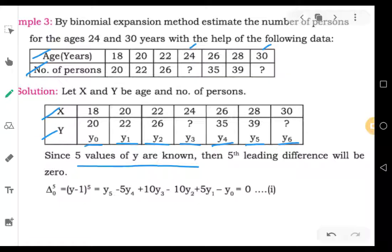That means we have to take 5th leading difference. That is, delta to the power of 5 or y minus 1 to the power of 5 is 0.